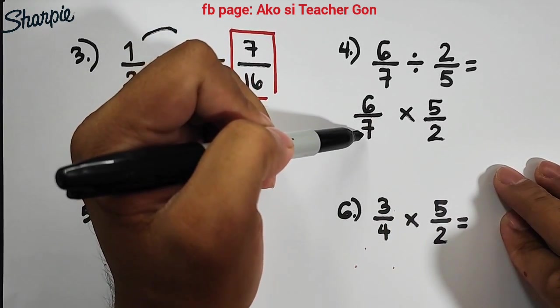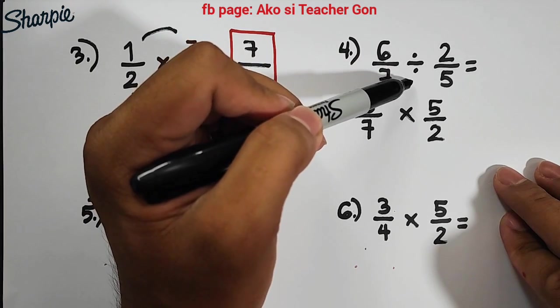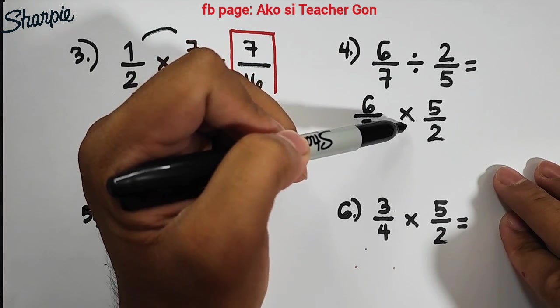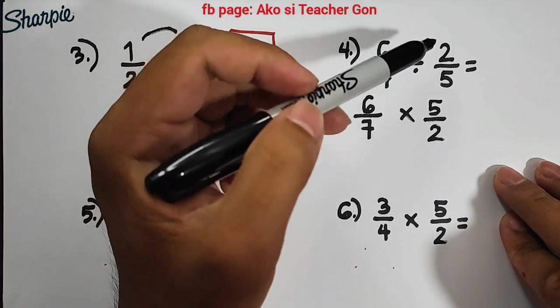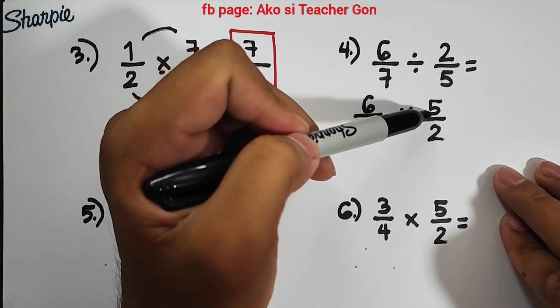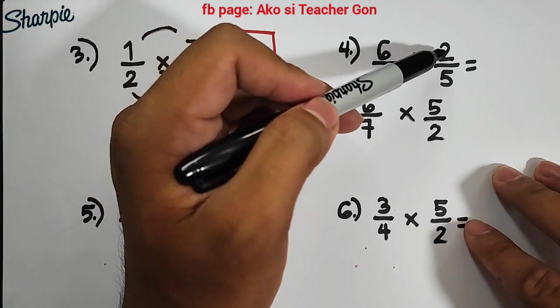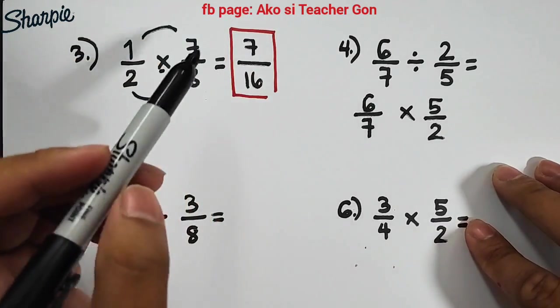You need to change this into a multiplication symbol, and then for the second fraction, you need to get the reciprocal of it, which is 5/2. You flip or interchange the position of your numerator and denominator, and then go with multiplication.